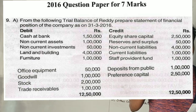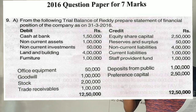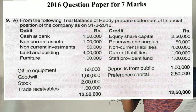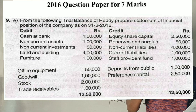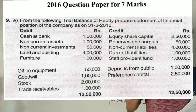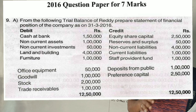On the debit side of the company we have: cash at bank, non-current assets, non-current investment, land and building, furniture, office equipment, goodwill, stock, and trade receivables — with their respective totals.